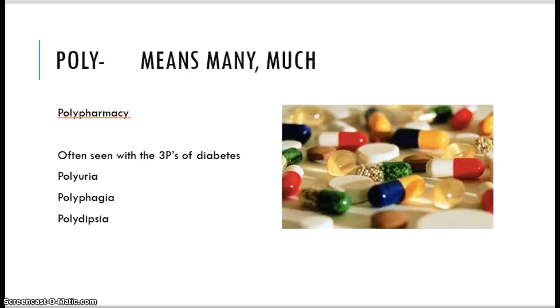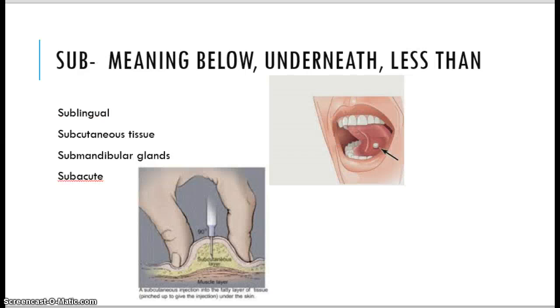We also see that with diabetes when we talk about the three Ps of a diabetic. Polyuria, which means to void often or much urine. Polyphagia, which is to be hungry all the time. And polydipsia is to be thirsty all the time or much thirst. Those are all symptoms of diabetes that help us to know that we need to test them for it.